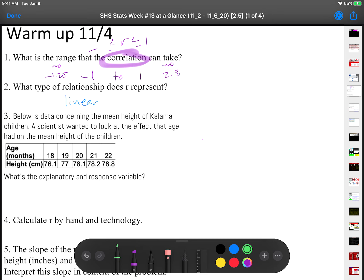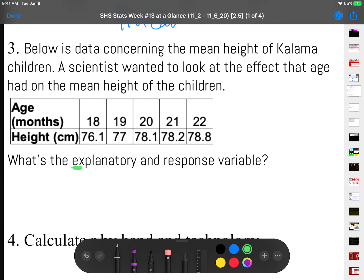Number three, below is data concerning the mean height of Kalama children. A scientist wanted to look at the effect that age had on the mean height of the children. What is the explanatory variable and the response variable? Remember that explanatory is the x because it helps us explain what is happening. And then the response are the results. So the explanatory variable is age and the response variable is height.